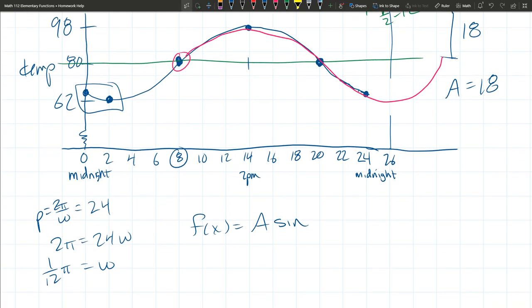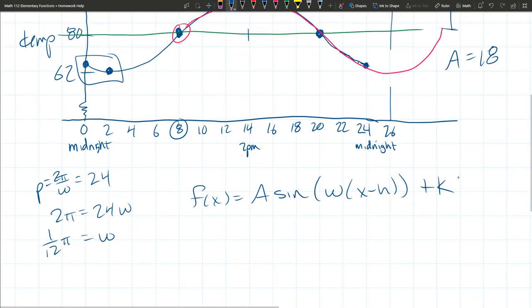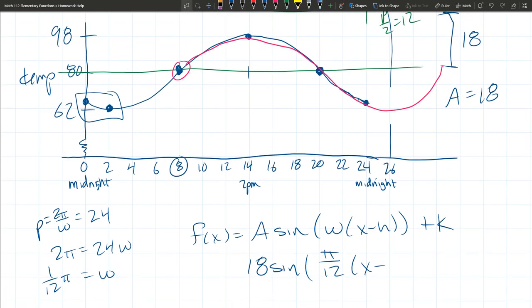So we got A sin(w(x-h)) + k. So we got all four transformations we have to deal with. Good news is we know a bunch of them already. 18 is the amplitude. w we just computed. You can write that as just π over 12. What's our shift? Our shift is right 8. So let's write that down: shift is right 8.